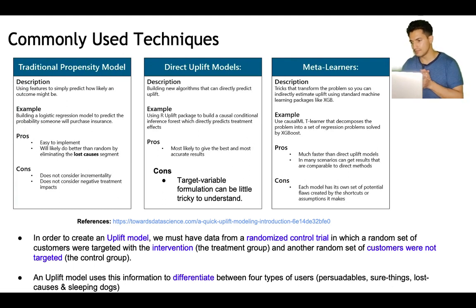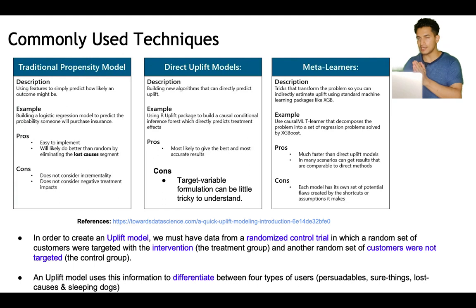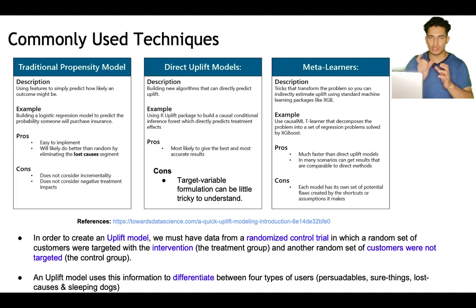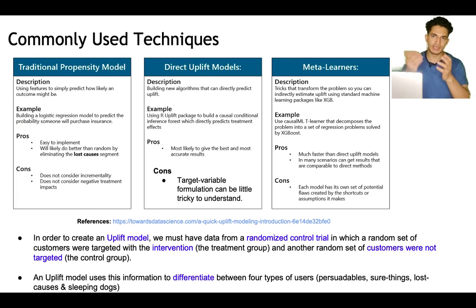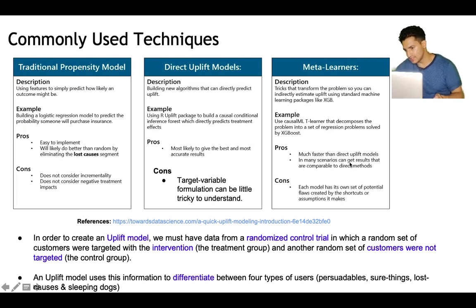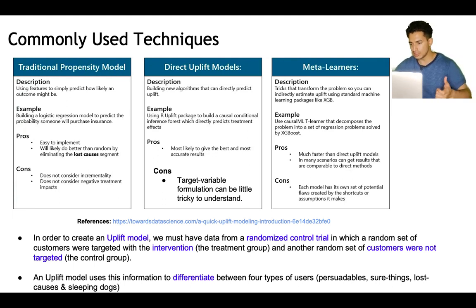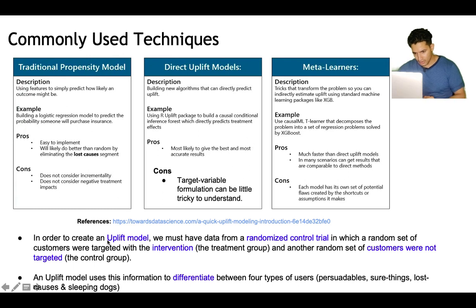Meta learners use a transformation of the problem so you can directly estimate uplift using standard machine learning techniques. We know how to solve a classification or regression problem — in meta learners they simply solve the classification or regression problem and the final output is transformed in such a way that it gives us the uplift. So uplift is not directly predicted but in an indirect way. Pros: much faster than direct uplift methods and in many scenarios results are comparable to direct methods. Cons: because we are using a proxy shortcut, it may be a little inaccurate at times.